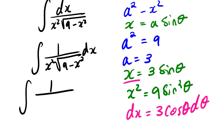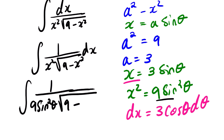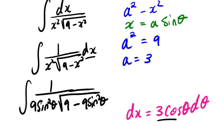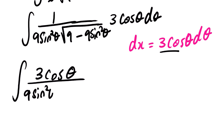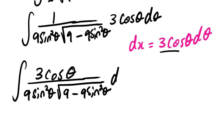Substituting, we have 1 over x squared, which is 9 sine squared theta, times the square root of 9 minus 9 sine squared theta. Where we see dx we substitute 3 cos theta d theta. This becomes 3 cos theta over 9 sine squared theta, times the square root of 9 minus 9 sine squared theta, d theta.